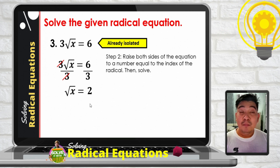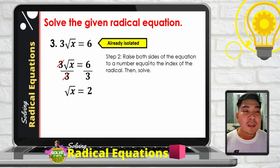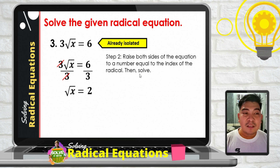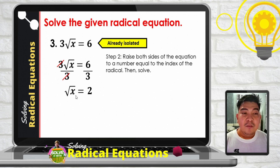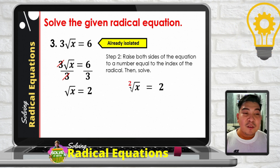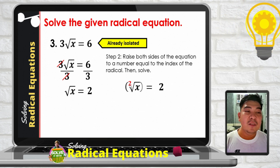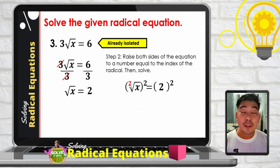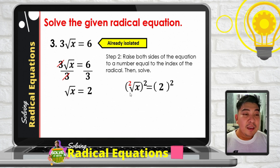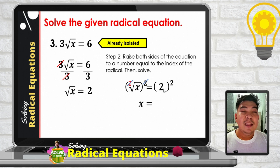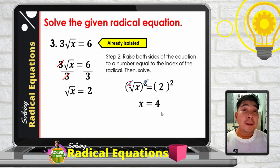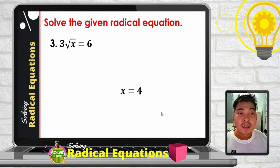Step 2: raise both sides to a power equal to the index, which is 2. The square root of x squared gives x, and 2 squared gives 4. So x equals 4.